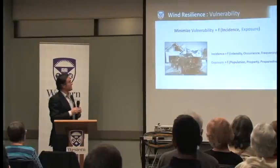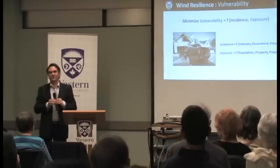Talking about resilience, the problem of wind resilience is a problem of minimizing the vulnerability of a building or a community to wind events. This vulnerability is a function of two parameters: incidence — the type of storm coming upon you — and exposure — how exposed we are as a community. Incidence can be split into intensity, which is maximum wind speed; occurrence, where the storms happen; and frequency, how often they happen.